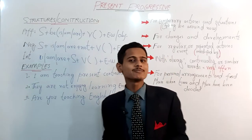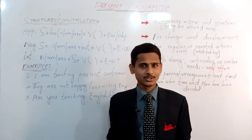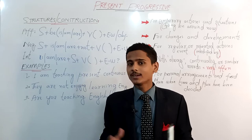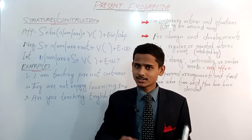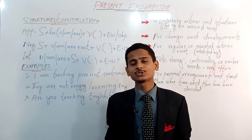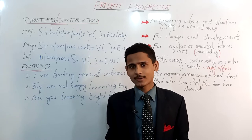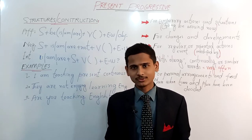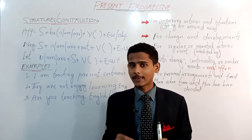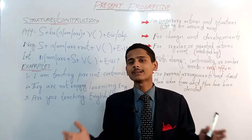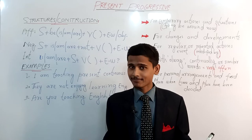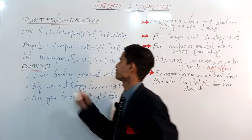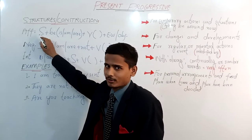Before that, I would like to mention why we actually use present progressive or continuous. Both are names for the same tense, used to express actions or situations which may or may not be going on at the time of speaking. I'm repeating again: which may or may not be happening at the time of speaking.